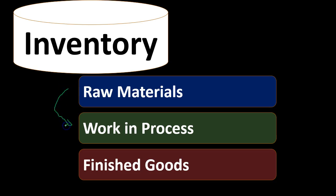Work in process is still inventory, but we can't sell it yet because it's in process. This is the inventory that we're making — the wood has started to be converted to a guitar, but it's not there yet. It still has value; it's still inventory. Both raw materials and work in process are components of inventory that we cannot yet sell.